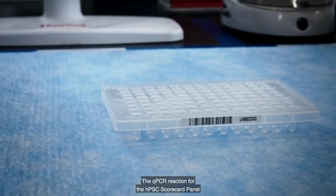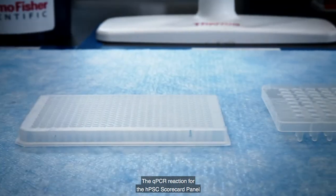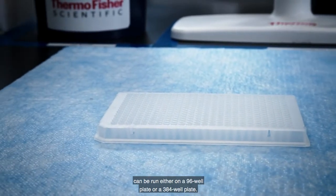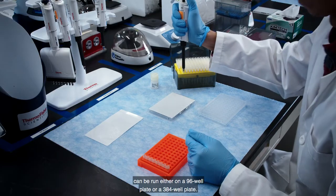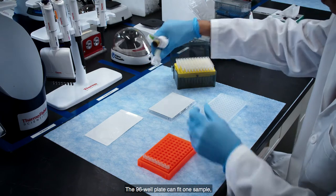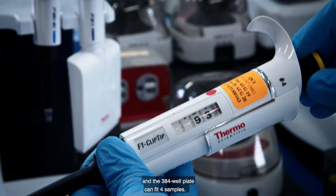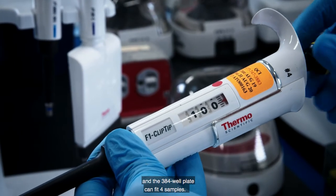The qPCR reaction for the HPSC Scorecard Panel can be run either on a 96-well plate or a 384-well plate. The 96-well plate can fit one sample and the 384-well plate can fit four samples.